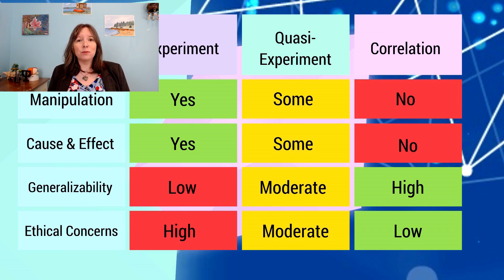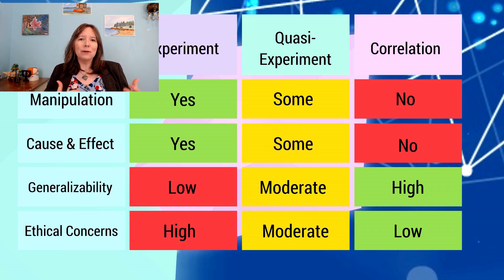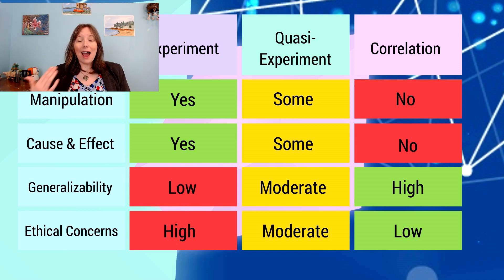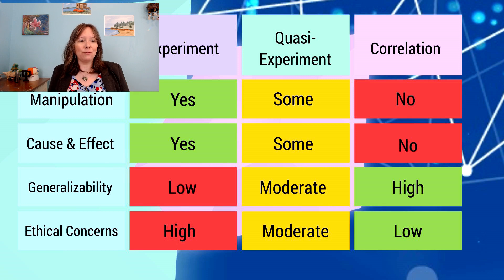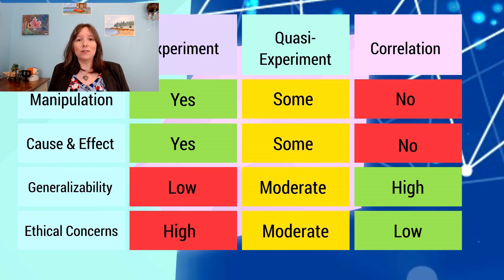However, because a true experiment is conducted in a lab using a driving simulator, it's not as realistic as it could be. How a person performs in a simulator while researchers are watching may not generalize to how they would actually drive on the streets using recreational cannabis — so it has low generalizability. Additionally, randomizing who gets cannabis could raise ethical concerns, especially with more powerful substances like opiates.